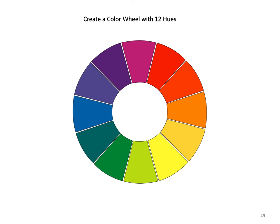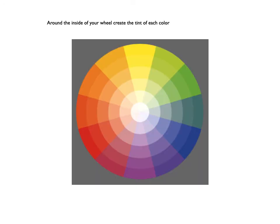For the first part of this project, you have to create a color wheel with 12 hues — the three primary, three secondary, and six tertiary — in the correct order. Around the inside of the color wheel, you're going to create a tint of each hue. You only have to do one tint, and they should look like they all have about the same amount of white. You'll have to visually match the amount of white in each tint — you'll probably need a lot less white when mixing yellow than with blue.